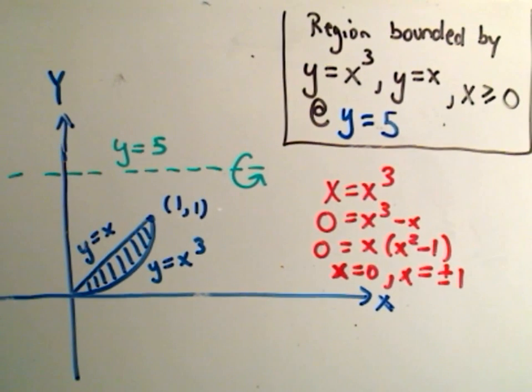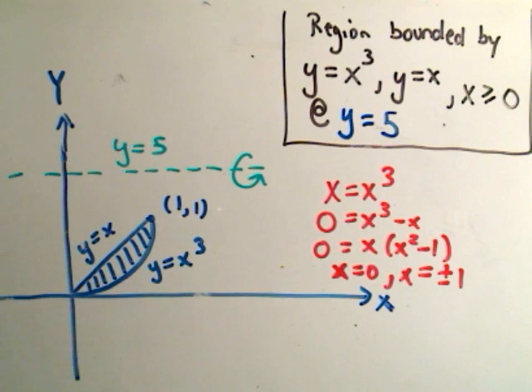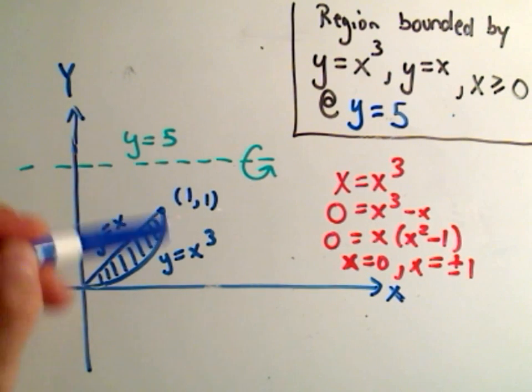So again, we're doing the region bounded by x cubed and x, where x is greater than or equal to 0. So that's going to give us the region in the top right quadrant. Here's the graph of y equals x, y equals x cubed.